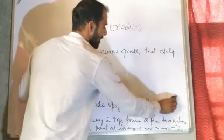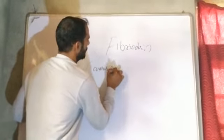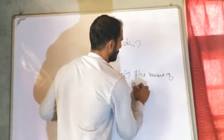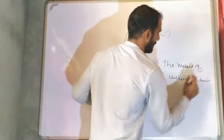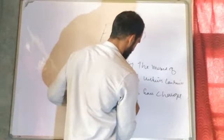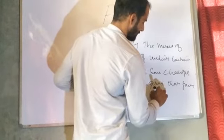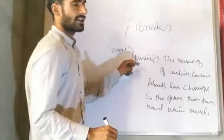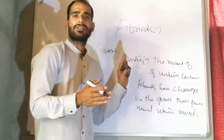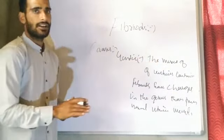Next, we will move to what causes fibroids and who is at risk of having fibroids. Causes: Genetic — the muscles of the uterus containing fibroids have changes in the genes compared to normal uterine muscles. So the fibroid uterus is different compared to the normal uterus, and genetics is one factor.